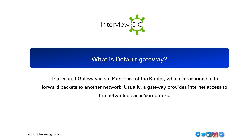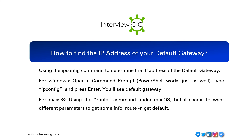How do you find the IP address of your default gateway? Use the ipconfig command to determine the IP address of the default gateway. For Windows, open a command prompt (PowerShell works just as well), type ipconfig, and press Enter. You'll see the default gateway listed. For macOS, use the route command.